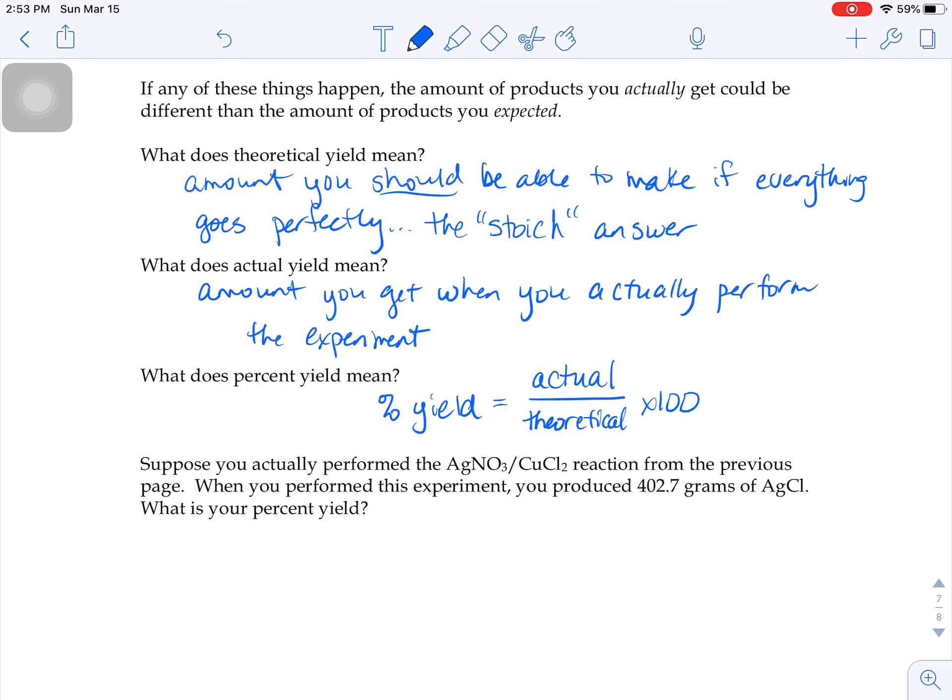When you perform this experiment, let's say you got 402.7 grams of silver chloride. It wants to know what your percent yield is.